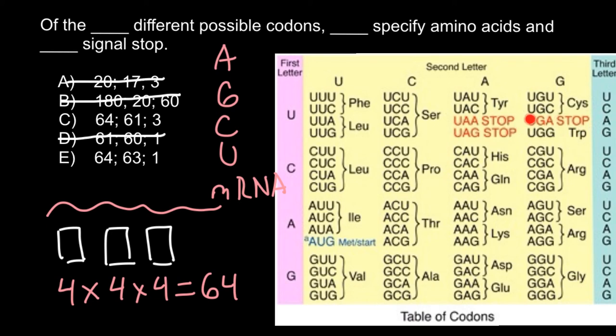And three of them don't code for amino acids. So as you see, the correct answer is C.